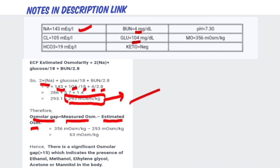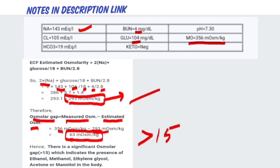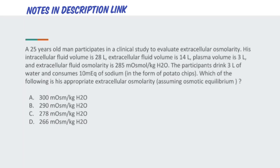The next step is to calculate the osmolar gap: measured minus estimated osmolarity. The measured osmolarity is 356 milliosmol/kg. So 356 minus 293 = 63 milliosmol/kg. Since this exceeds 15, it indicates a hidden substance in the patient's blood — likely ethanol, methanol, ethyl alcohol, acetone, or mannitol.